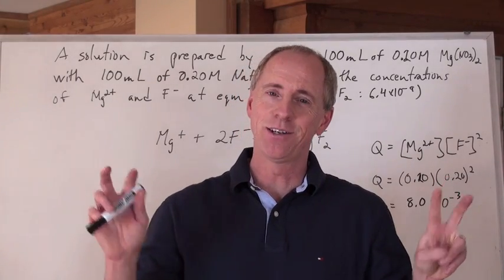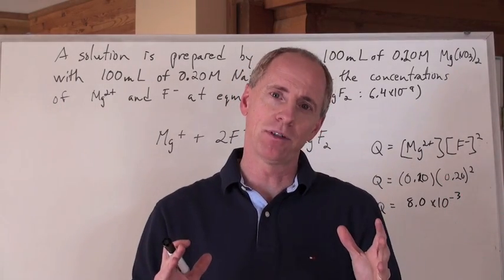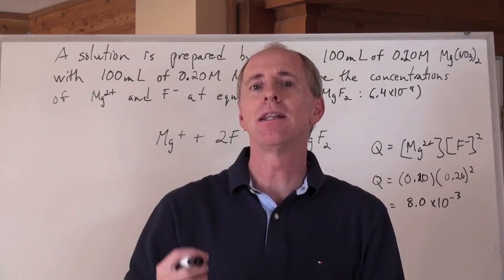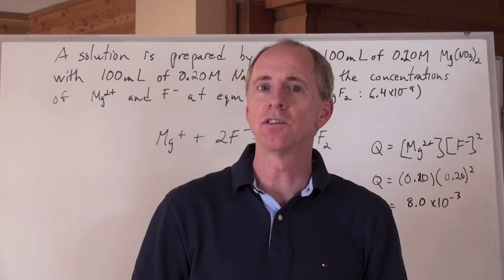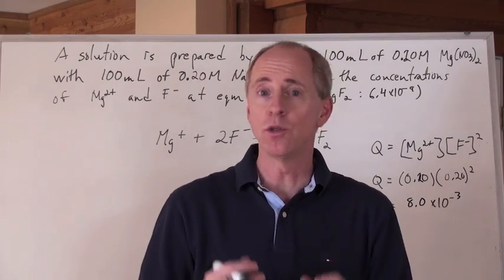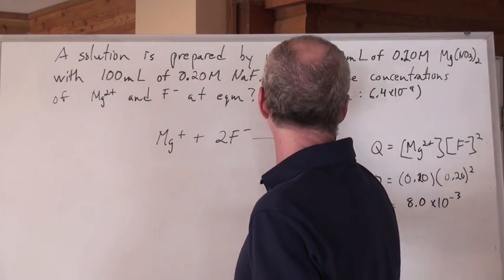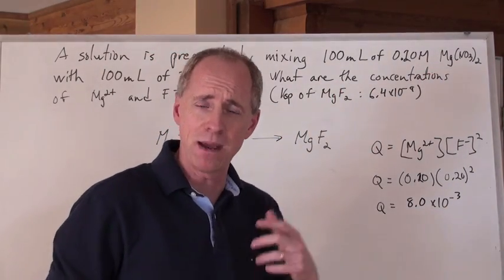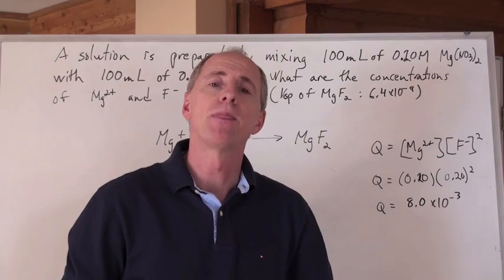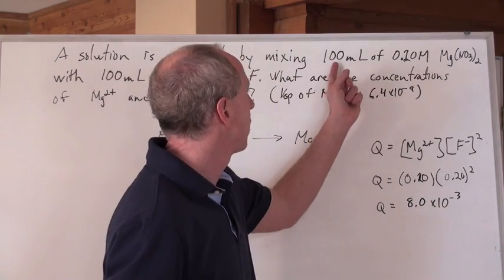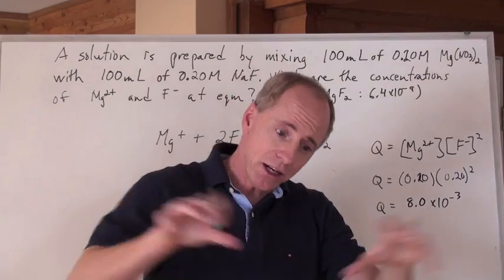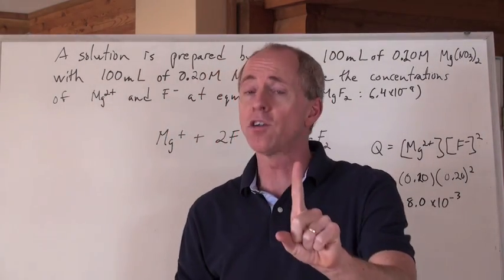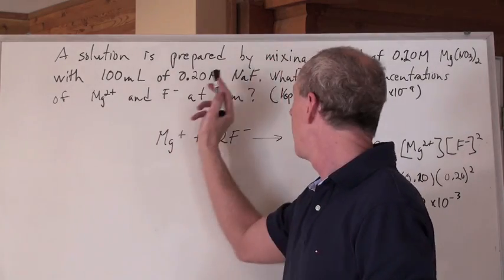Here's a nice equilibrium problem that encapsulates how to tell if you've got a precipitate, and once you do, how to calculate the remaining concentration of ions in solution. A solution is prepared by mixing two chemicals: magnesium nitrate, which is highly soluble since nitrates are very soluble, at 100 mL of 0.2 mol/L, and 100 mL of 0.2 mol/L sodium fluoride solution, which is also very soluble due to the presence of the alkali metal sodium.